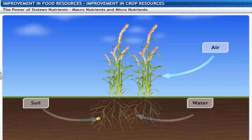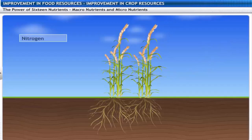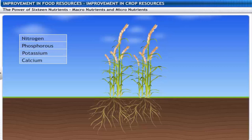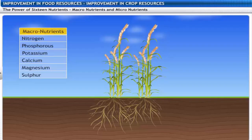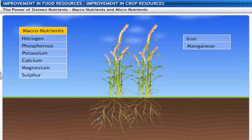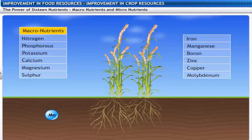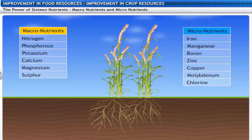Among these thirteen nutrients, six nutrients — nitrogen, phosphorus, potassium, calcium, magnesium and sulphur — are required in large quantities and are called macronutrients. The other seven nutrients — iron, manganese, boron, zinc, copper, molybdenum and chlorine — are used by plants in smaller quantities and are called micronutrients.